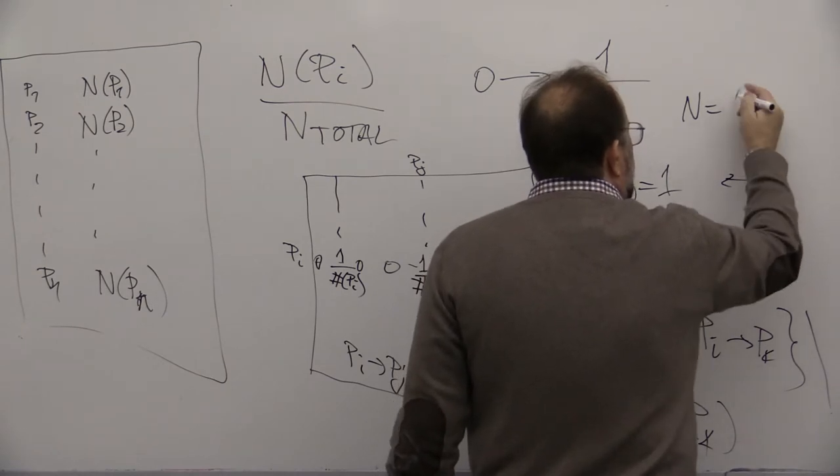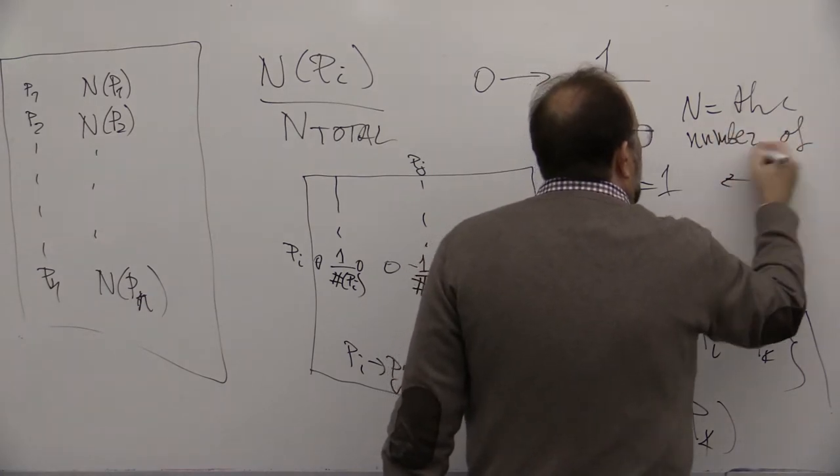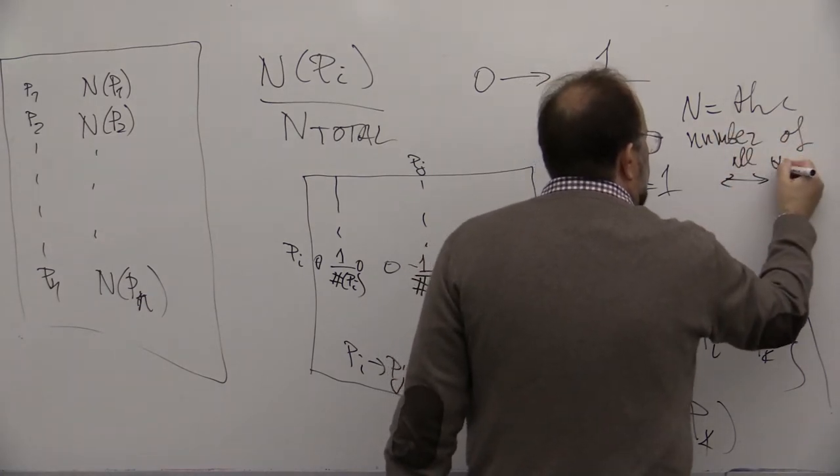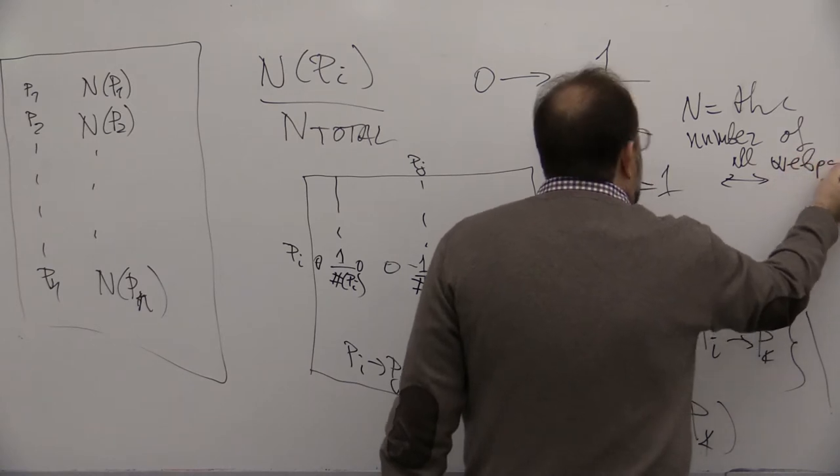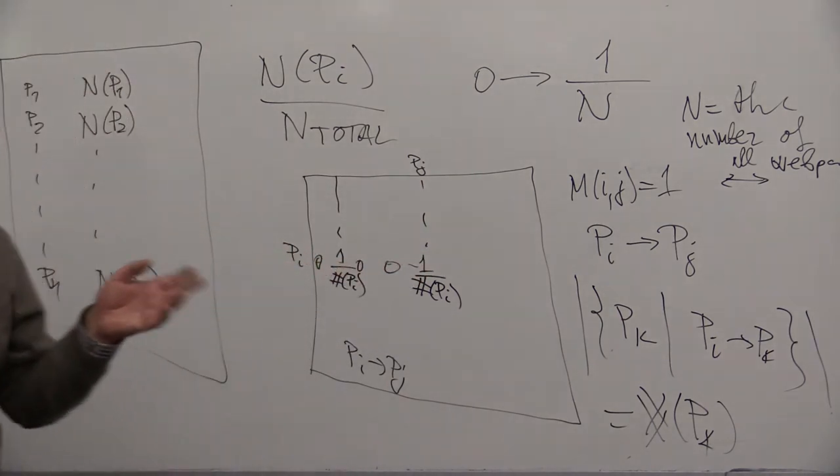So N is the number of all web pages. So this will be 1 over 100 billion maybe, right?